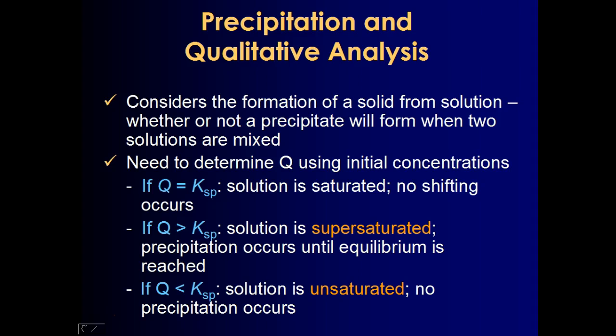If it's less than the Ksp value, your solution is unsaturated and the ions will remain in solution. If it's equal to it, it's right on the precipice of forming a precipitate, so it's a saturated solution. And then if it's greater than it, we do shift back to the reactant side forming our precipitate.